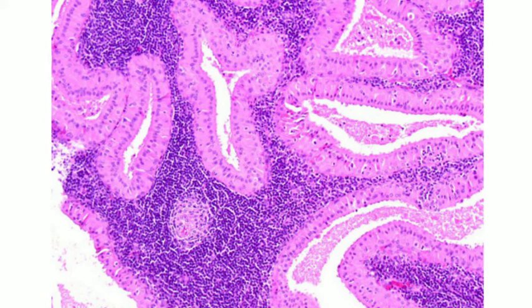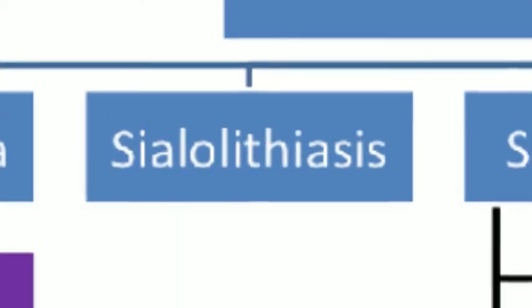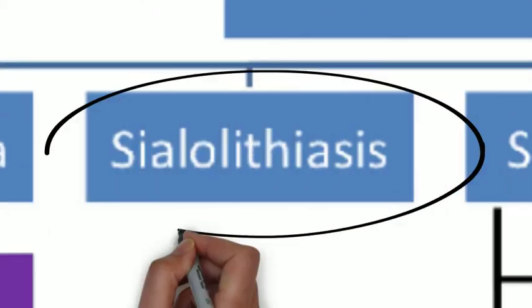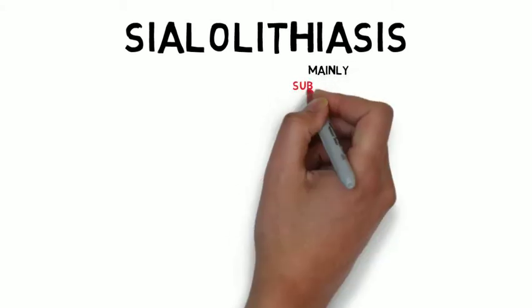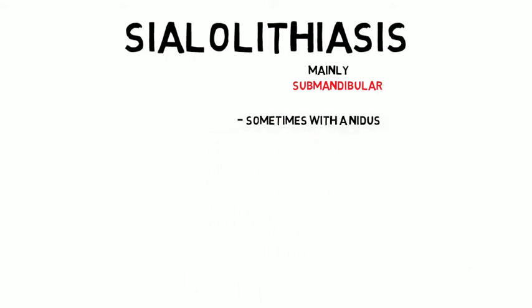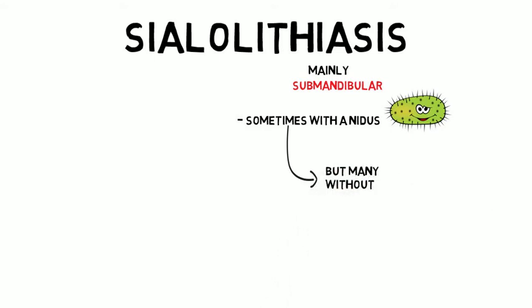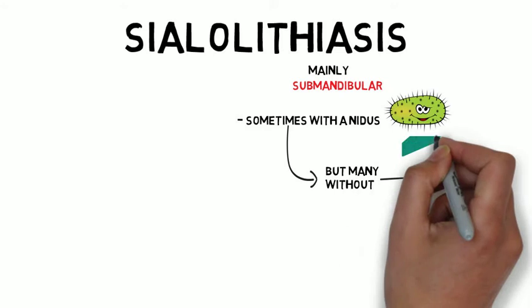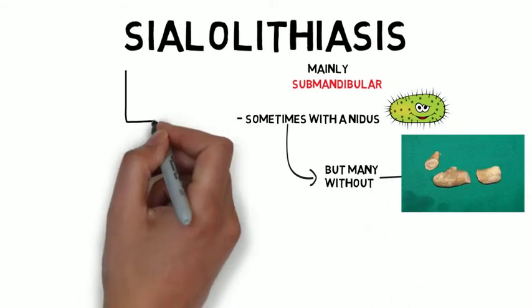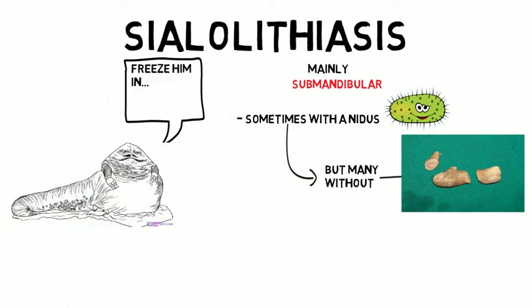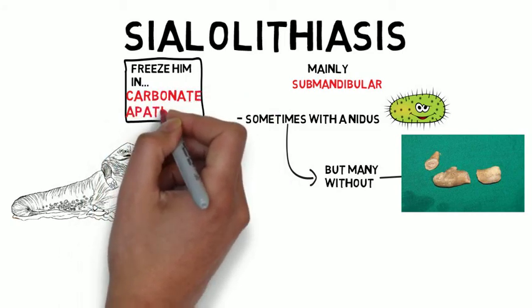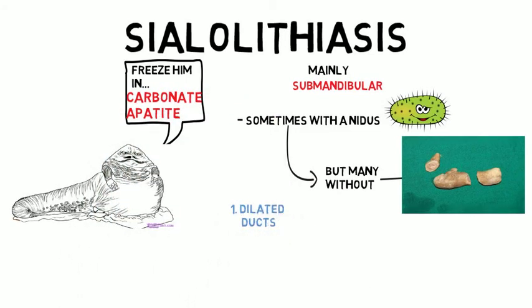Next is sialolithiasis, or stones in the salivary gland. Sialolithiasis occurs mainly in the submandibular gland and sometimes has a nidus; when it does, that nidus is often bacterial. However, most stones do not have a nidus. Those stones are made of carbonate apatite — an easily testable fact. Histologically, you'll see dilated ducts, squamous metaplasia, destruction of the acini, and perioductal fibrosis.